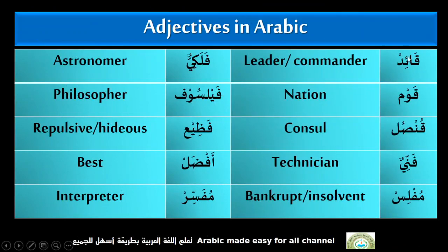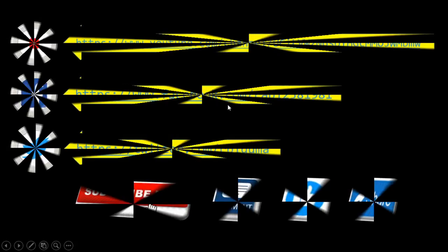Tezzeb — Liar. Kaib — Leader, Commander. Kaumun — Nation. Konsul — Consul. Funniun — Technician. Mophilusun — Bankrupt, Insolvent. Falakiyun — Astronomer. Palsuophon — Philosopher. Kadriye — Repulsive, Hideous. Afudan — Best. Mufassir — Interpreter.